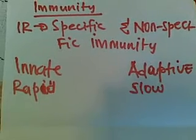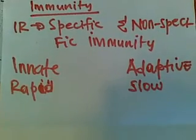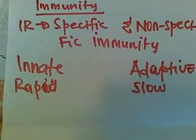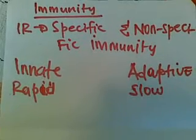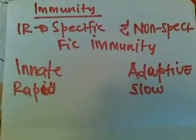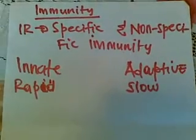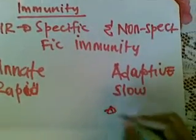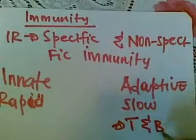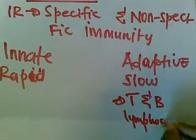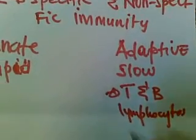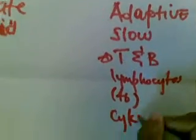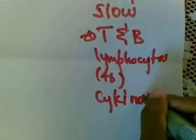The molecules involved for these immunities to occur: innate immunity usually uses cytokines, complementary proteins, acute phase proteins, and soluble mediators. Adaptive immunity uses T and B lymphocytes, innate antibodies, and cytokines.